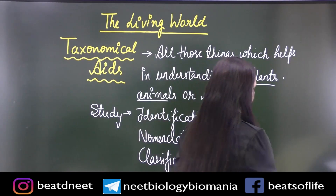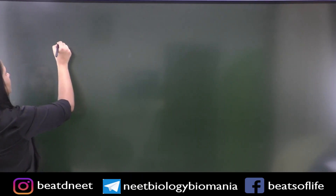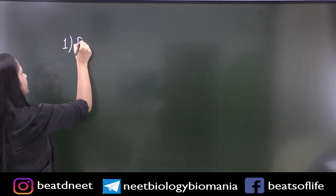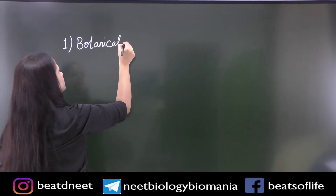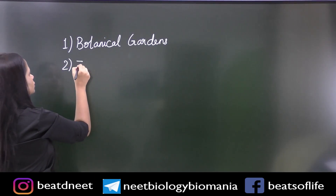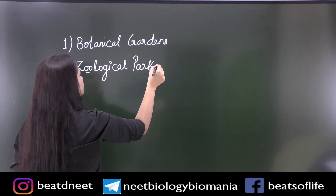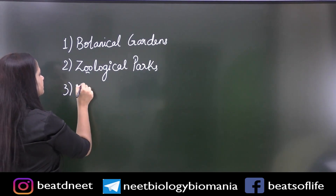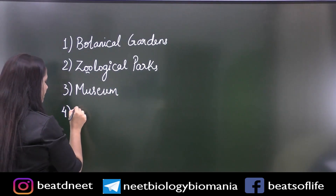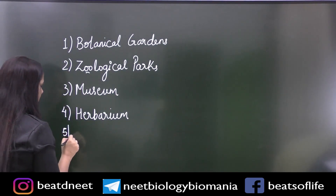Now, what do we have in taxonomical aids? There are a lot of things, such as: number one — botanical gardens; number two — zoological park; number three — museum; number four — herbarium; and number five — key.